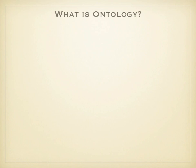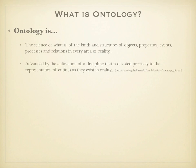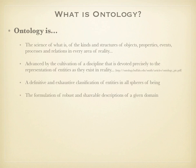So what is ontology anyway? Ontology is both a method and a product of that method. Ontology is the science of what is — of the kinds and structures of objects, properties, events, processes, and relations in every area of reality. It is advanced by the cultivation of a discipline devoted precisely to the representation of entities as they exist in reality. It is a definitive and exhaustive classification of entities in all spheres of being. An ontology is the formulation of robust and shareable descriptions of a given domain.